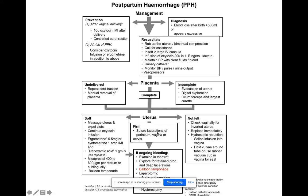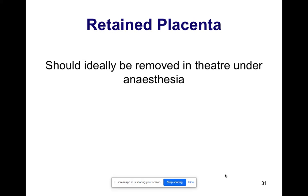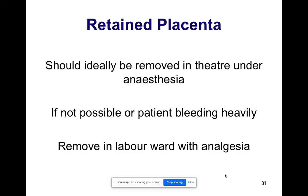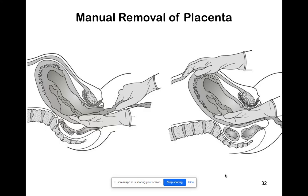If the uterus is well contracted, all measures have been taken, there is still ongoing bleeding and it is not uterine inversion, the patient needs to go to theatre for EUA. Perform evacuation if needed, insert a balloon tamponade, and if bleeding continues, proceed to laparotomy. Perform aortic compression while waiting for senior assistance, or do uterine artery ligation. If the patient is already on adrenaline, perform hysterectomy — a senior must do this. Retained placenta should ideally be removed in theatre under anaesthesia; if not possible or bleeding is heavy, it can be removed in labour ward with analgesia.